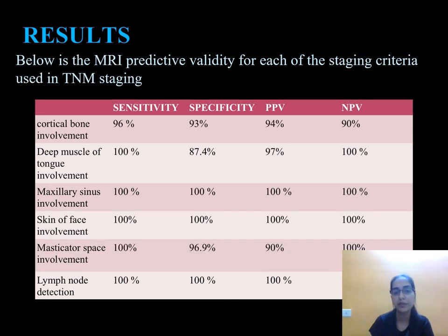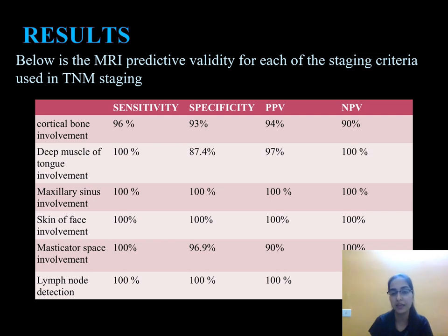The MRI predictive validity for each TNM staging criterion shows 100% positive predictive value in maxillary sinus involvement, skin of face involvement, and lymph node detection. MRI showed 94% PPV in cortical bone involvement, 97% positive predictive value in deep muscle of tongue involvement, and 90% in masticator space involvement.